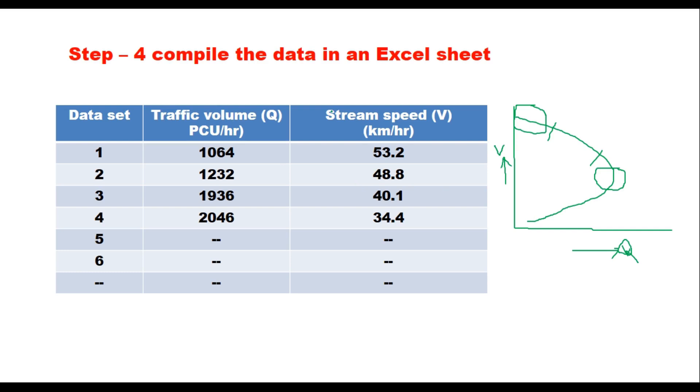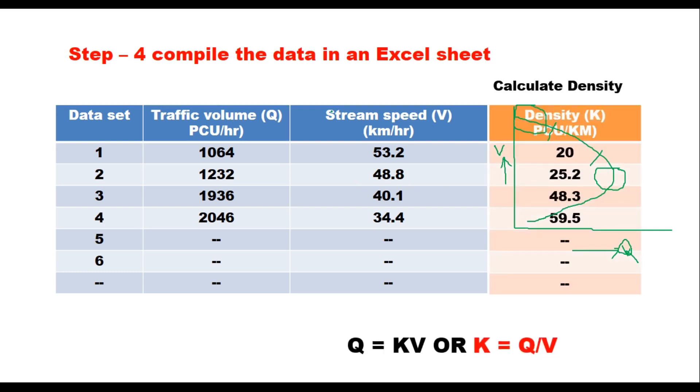You do not get the capacity by plotting simply the data which you get from the field. Therefore another method is that you generate the density data using this correlation Q equals K into V. So K is Q upon V. If you divide Q by V you get the density. So you can calculate the density for each 5 minute interval.